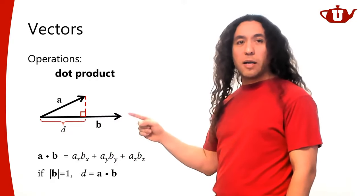Another very important equation: the dot product can also be written as the length of a times the length of b times the cosine of the angle between them. We'll often need the cosine of the angle between two directions. When both a and b are unit vectors, their lengths cancel out, so the dot product directly gives the cosine of the angle between them.